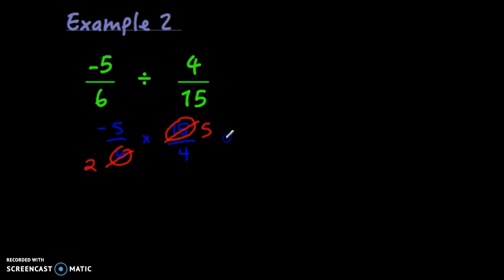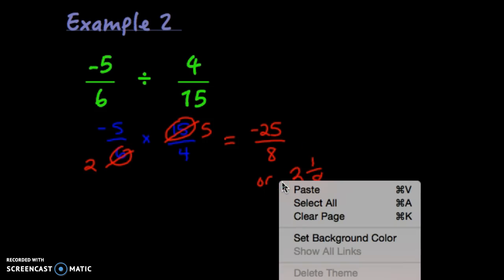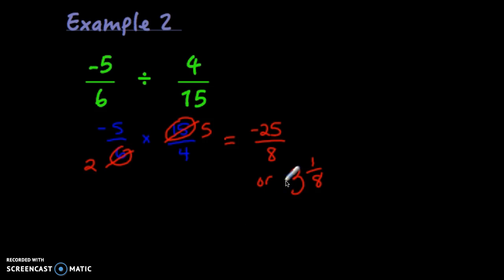Now I'm going to multiply straight across. Negative 5 times 5 is negative 25. 2 times 4 is 8. Negative 25 eighths is reduced. Or you can say 8 goes into 25 three times with 1 left over. So this is negative 3 and 1 eighth. I'll take either of those as a final answer.